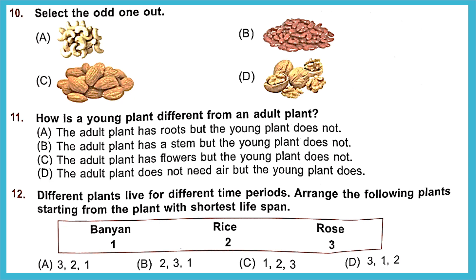Question 10: Select the odd one out. A is cashew, B is kidney bean, C is almond, and D is walnut. A, C, and D are dry fruits/nuts, whereas B — kidney bean — is a pulse. So B is the odd one out.